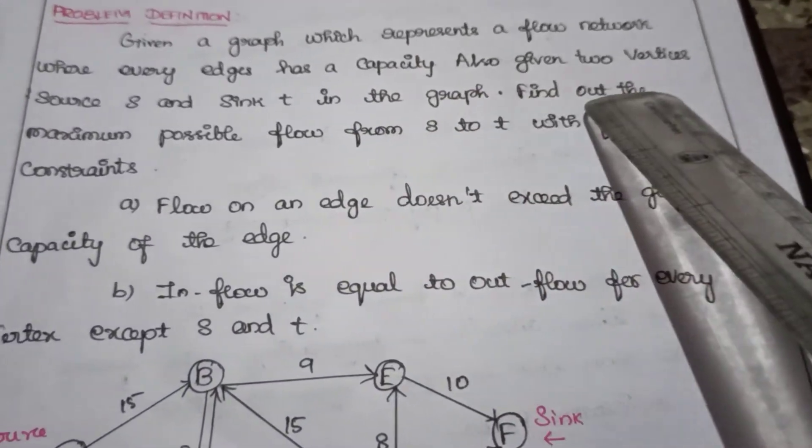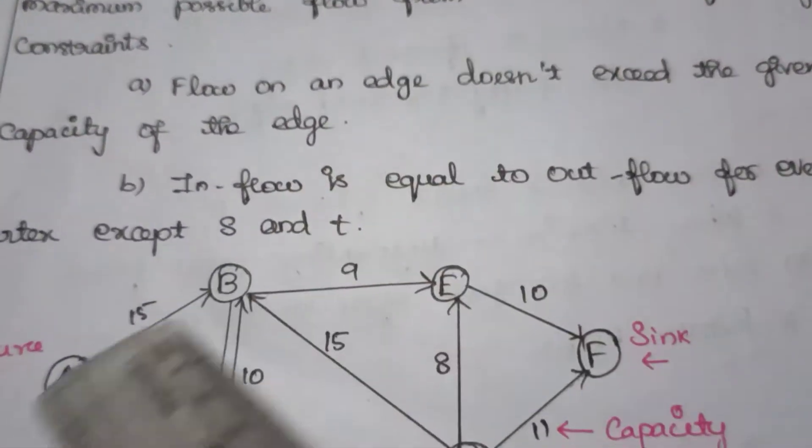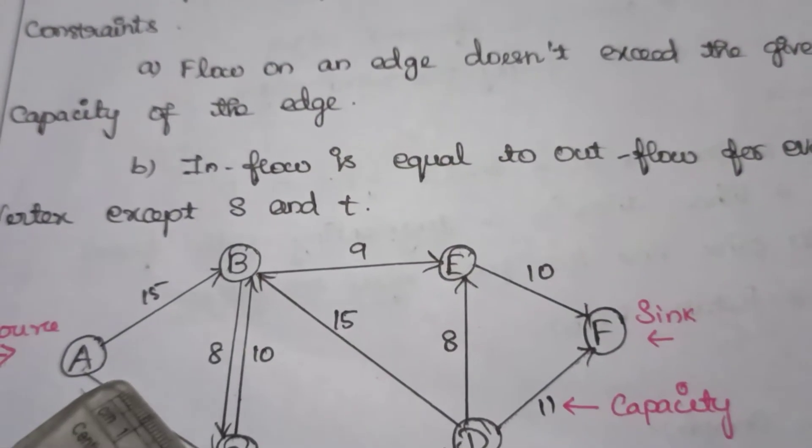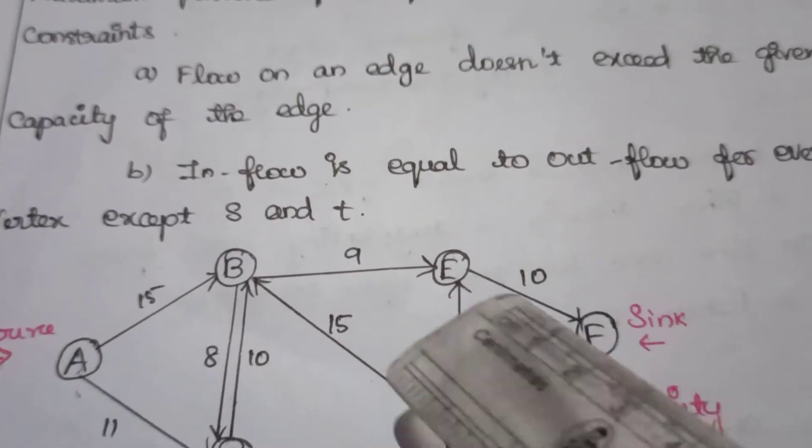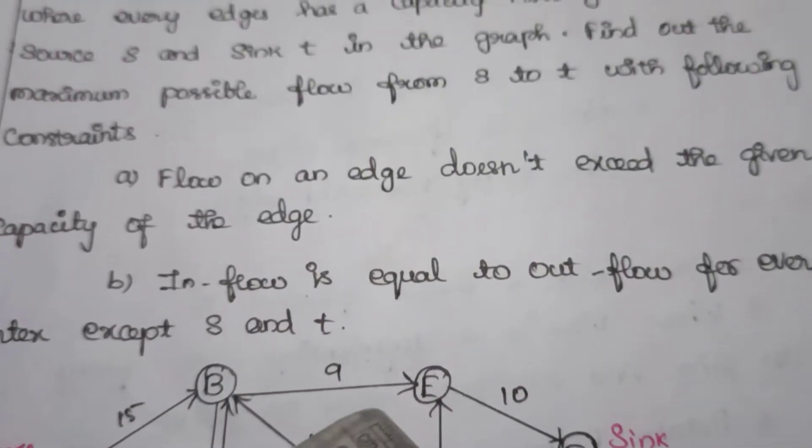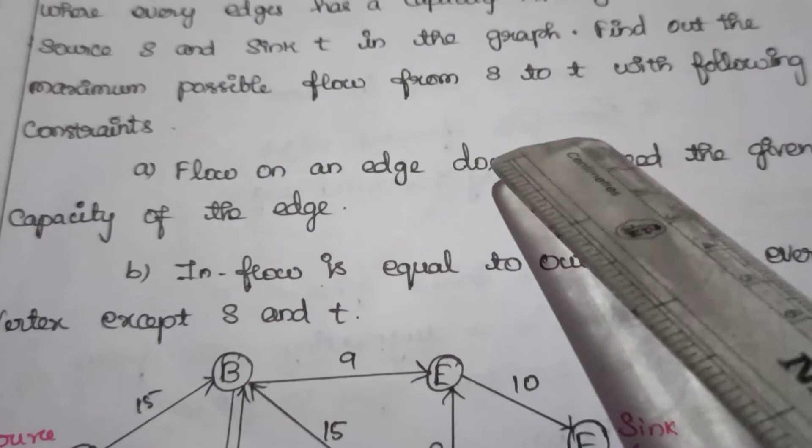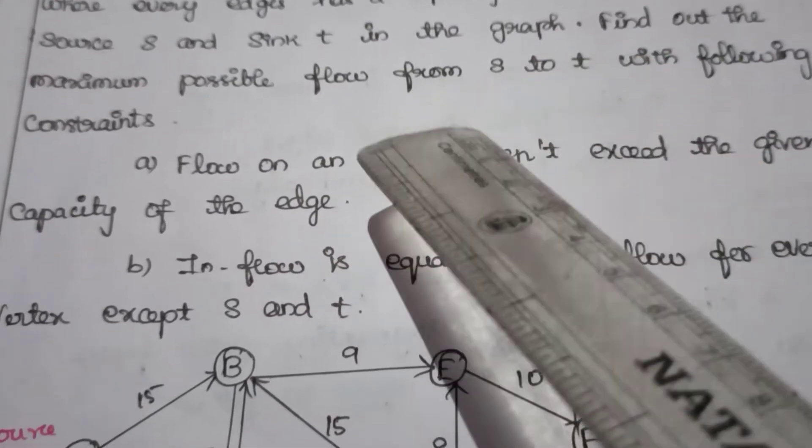Also given two vertices: source s and sink t in the graph. Source is the initial point and sink is the terminal point in the given flow network. We are going to find out the maximum possible flow from s to t with the following constraints.